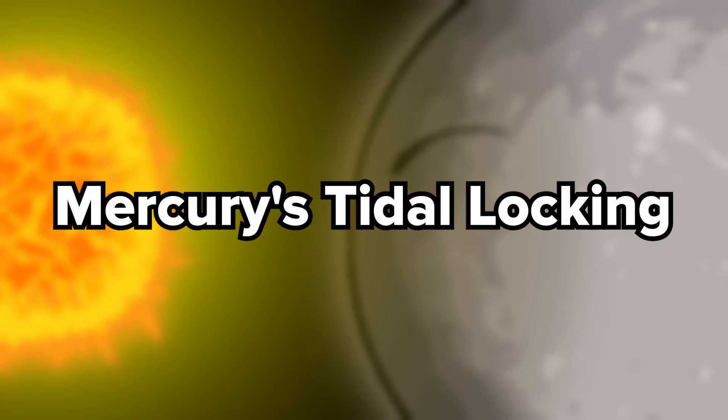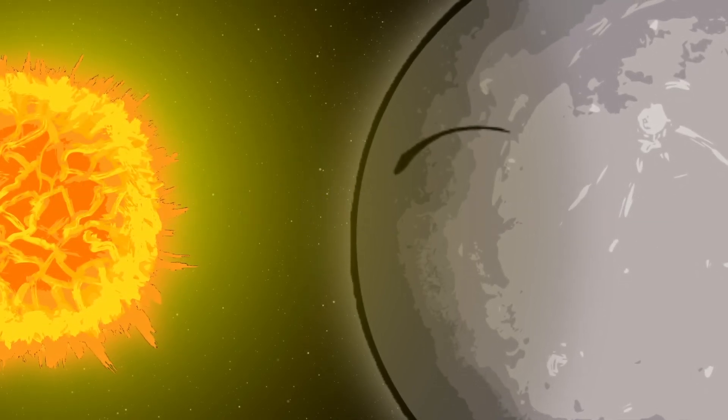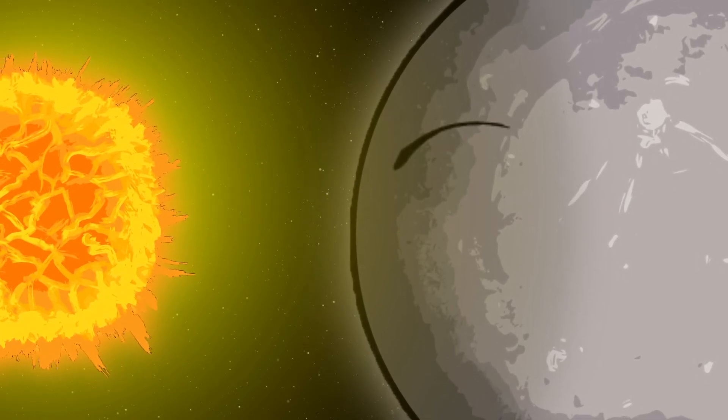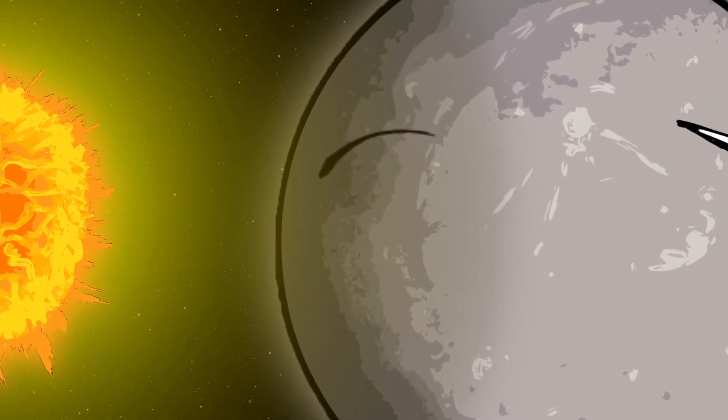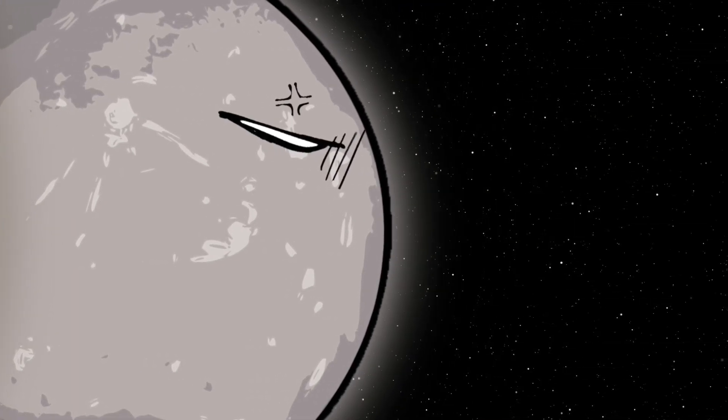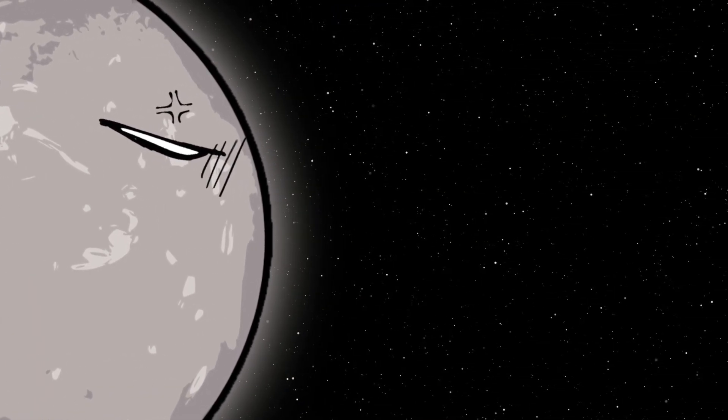Mercury's rotation is locked to its orbit around the Sun, so one side always faces the Sun while the other remains dark. This is due to the Sun's gravitational forces acting over time.